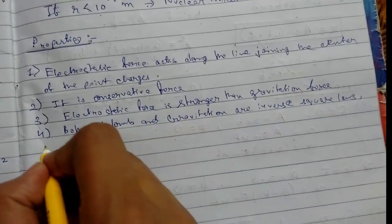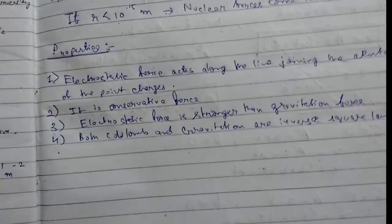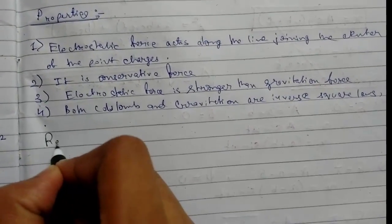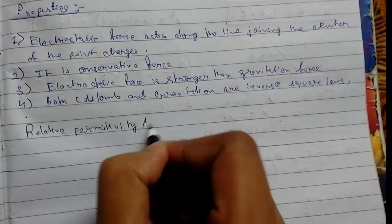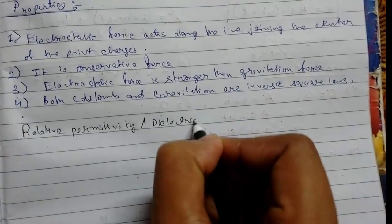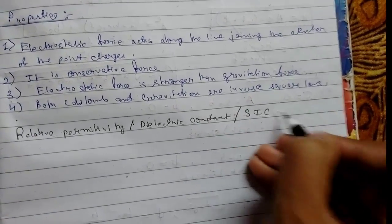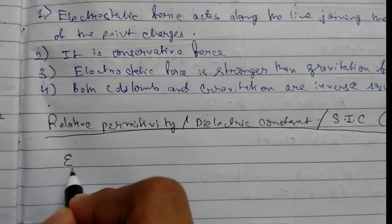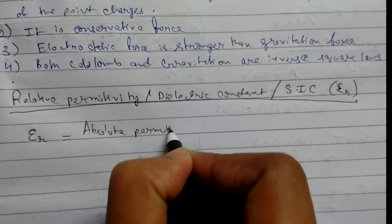Electrostatic force is a two-body force. Now we will discuss permittivity. Relative permittivity is also known as the dielectric constant, or epsilon R.